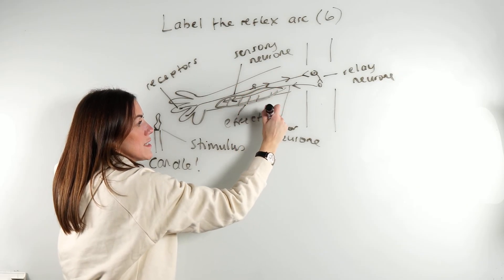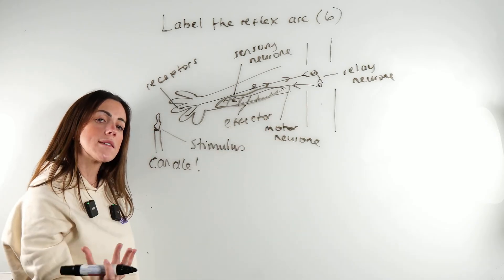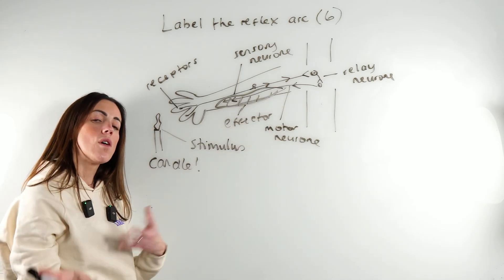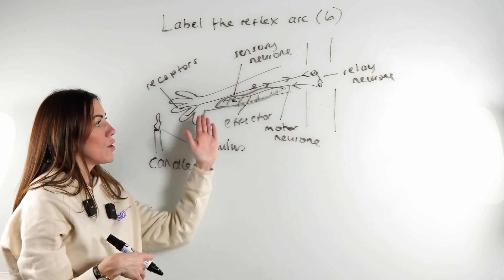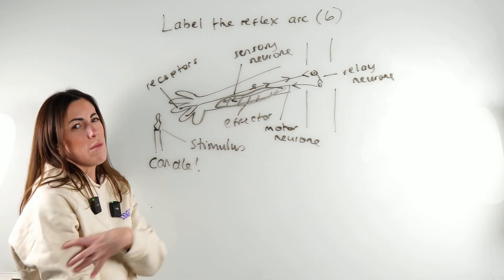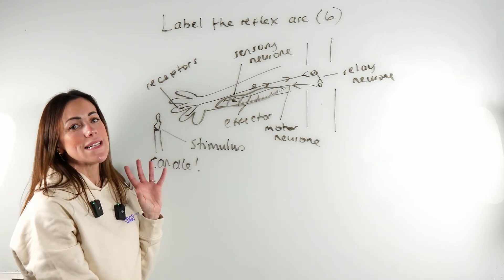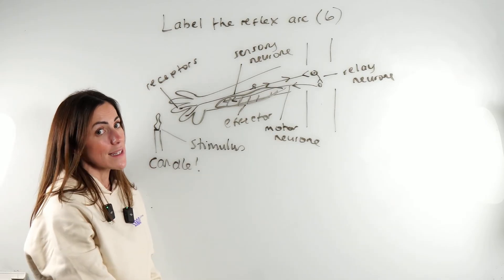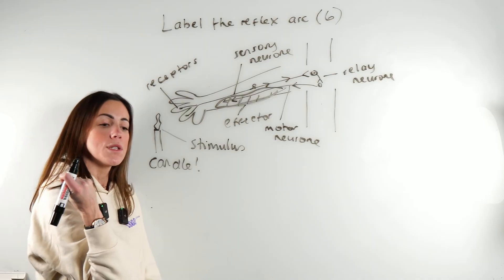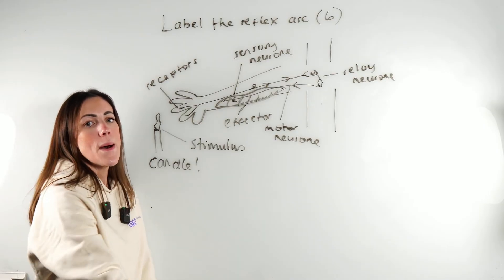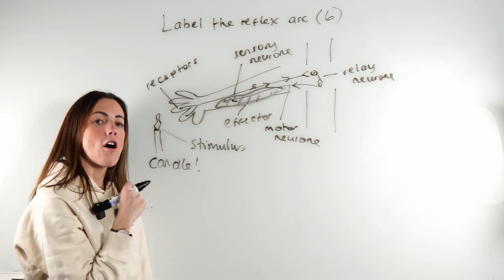Now effectors can only be one of two things: muscles or glands. In this example, the effector is the muscle—probably should be the bicep muscle—but anyway, what's going to happen is the muscle is going to contract, and that's going to help move your forearm and hand away from the candle.